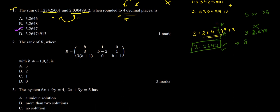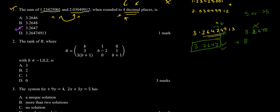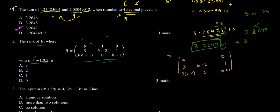Moving on to question two, we have a determinant question. We need to find the rank of matrix B, where B is a 3×3 matrix and b is not equal to minus one, zero, or two. To find the rank, we find the determinant of the matrix, which is written with entries b, 1, 0; then 3, b minus 2, 1; and 3, b plus 1, b plus 1.